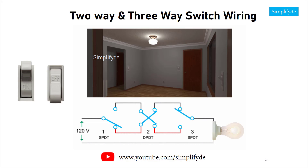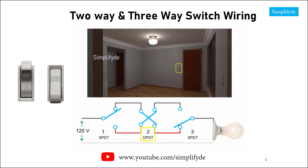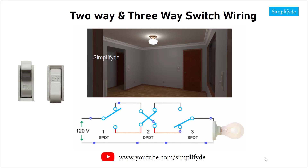If we change the position of both switch one and three while switch two remains in the crossover position, the current will still flow — this time from the black wire to the red wire — to complete the circuit and light the bulb.